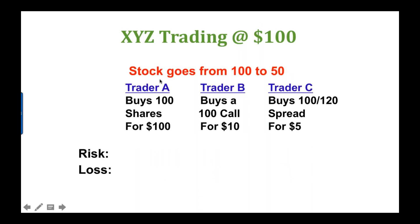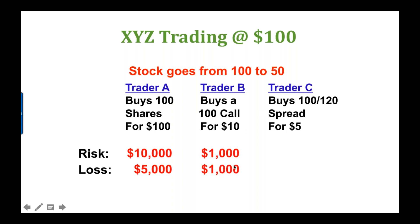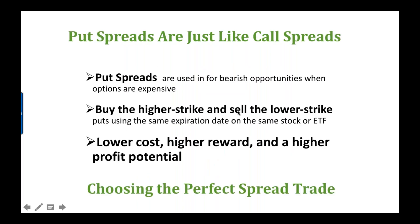Now let's look at risks and losses if we go the wrong way. If the stock drops from 100 to 50, the stock trader loses $5,000; the call trader loses at most the $1,000 paid for the call; the spread trader loses at most $500 — because you took in money to help finance the call you bought. Put spreads are just like call spreads, used in bearish opportunities when options are too expensive. You'd buy the higher strike, sell the lower strike, using the same expiration date. Put spreads also give you lower cost, higher reward, and higher profit potential.